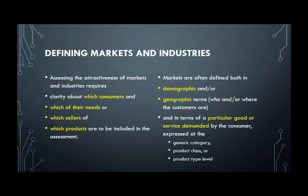When you're defining markets and industries, basically what you're doing is assessing the attractiveness of that market and industry. For example, if Nita makes a really good curry and she's going to decide to sell it, she needs to assess how attractive that industry is - say, the food or restaurant industry. She needs clarity about which customers she's selling to, which needs she's catering to, whether it's people who want lunch on the fly, moms who can't cook, or people who have an interest in Indian food and curry. She also needs to decide who else is selling curry or substitutes.